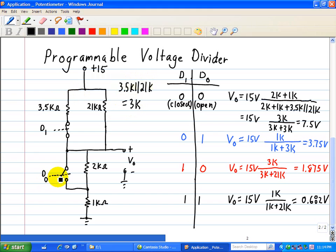Now when this D0 is open, we have 2k in series with 1k, which is basically the voltage V0. In other words, the voltage across the 2k in series with the 1k, the voltage output is V0.